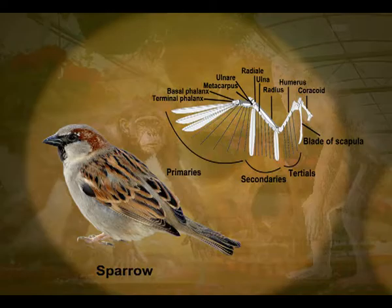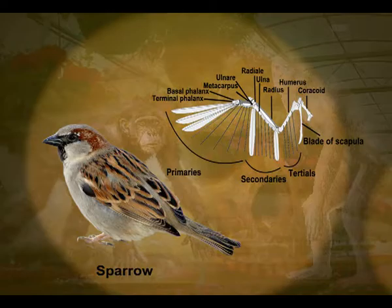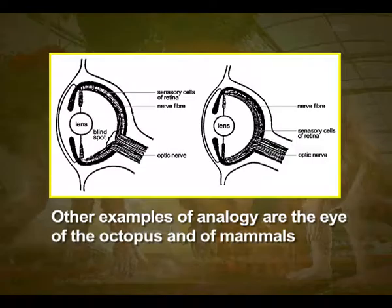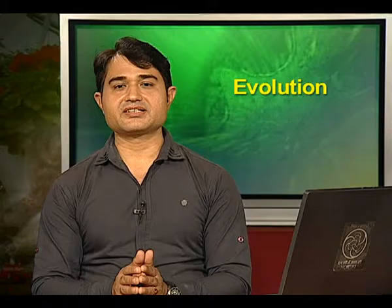Wings of a butterfly and of birds look alike. They are not anatomically similar structures, though they perform similar functions. Hence, analogous structures are a result of convergent evolution — different structures evolving for the same function and hence having similarity. Other examples of analogy are the eyes of the octopus and of mammals, or the flippers of penguins and dolphins. It is the similar habitat that has resulted in the selection of similar adaptive features in different groups of organisms serving the same function.